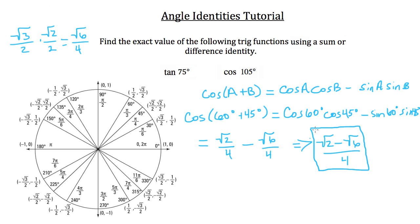Remember, you could put cosine of 105 degrees into your calculator and get a decimal answer, but it's non-terminating, so it's never going to be as exact as the value we've just derived here.